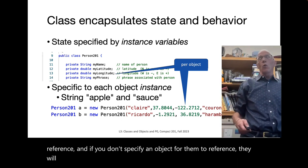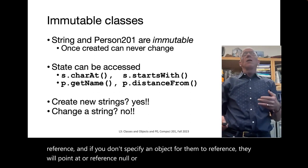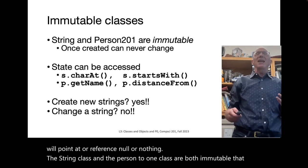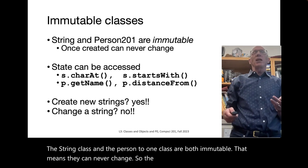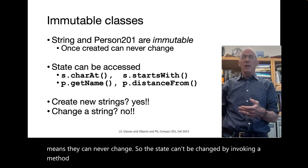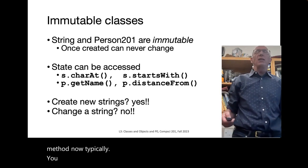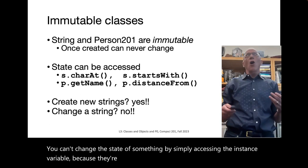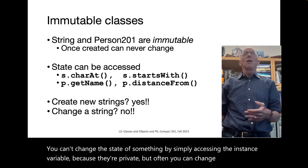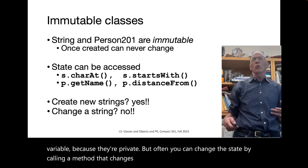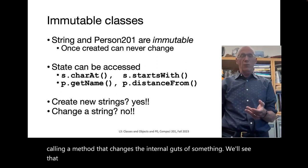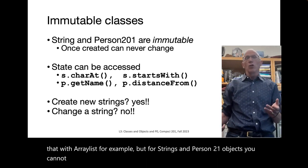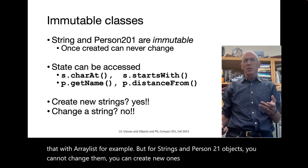Object variables such as myName and myPhrase are references to a location in memory that stores the strings. If you don't specifically assign a value to them, they don't point or reference anything — that's what null means. Both the string class and the Person201 class are immutable, meaning they can never change. The state can't be changed by invoking a method.